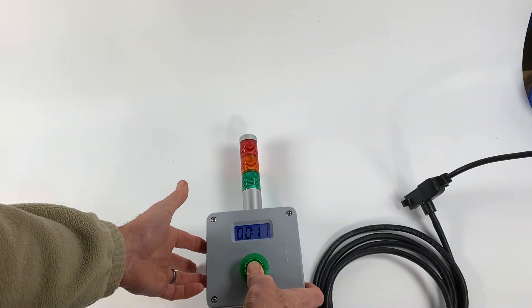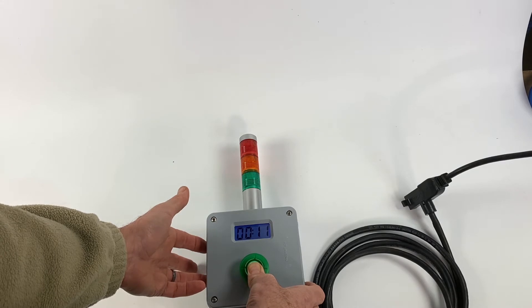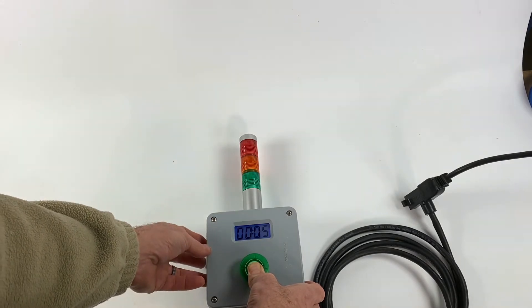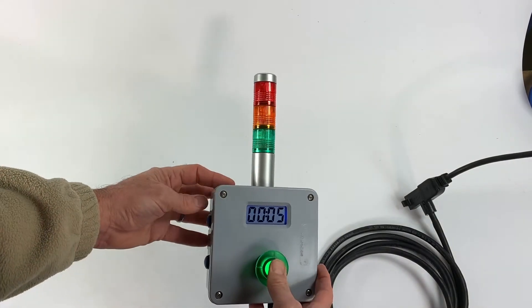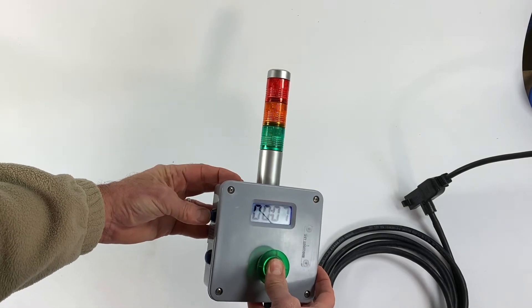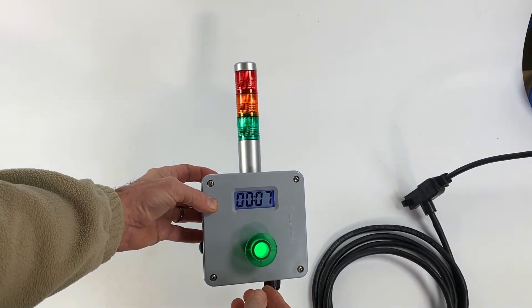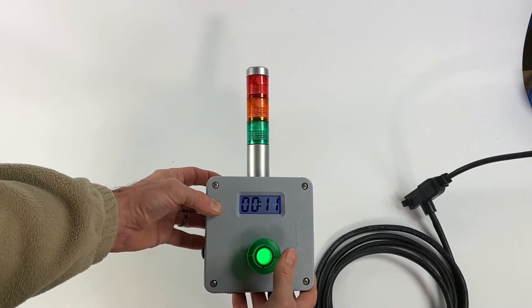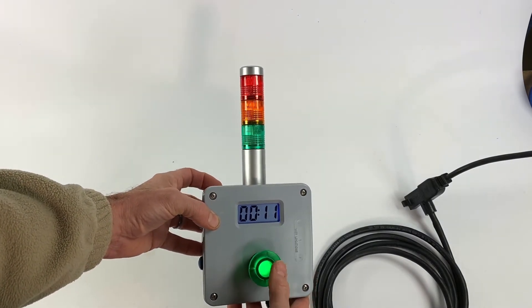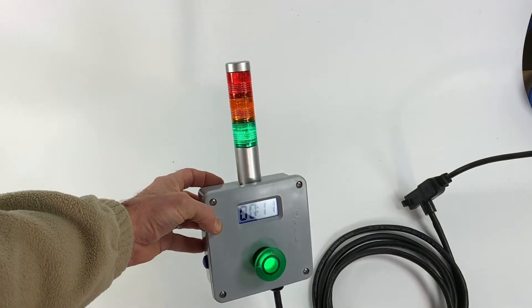When the display flashes, you can set the early warning time. We'll set it for seven seconds. Let go of it for a few seconds, and when it flashes again the time is registered. Now the early warning will go off at seven seconds.